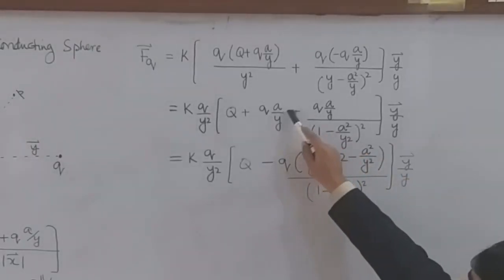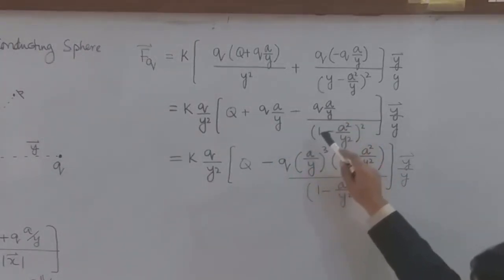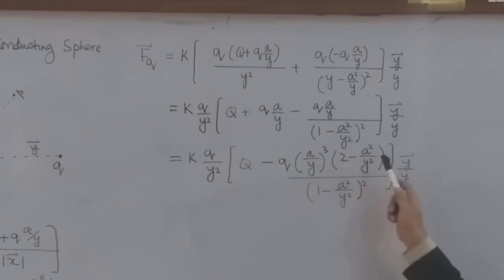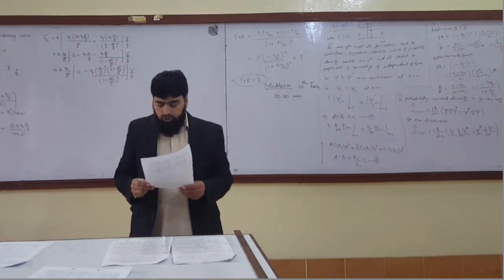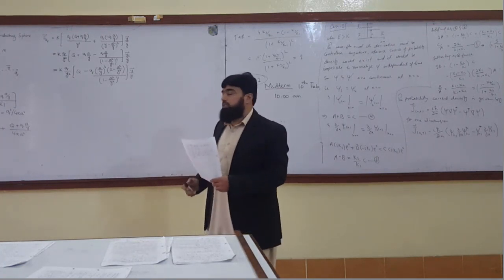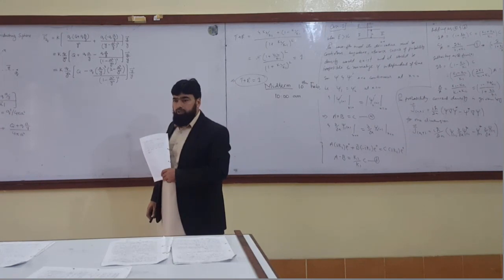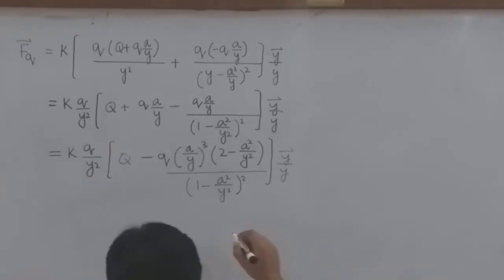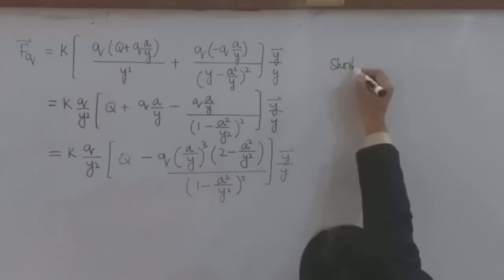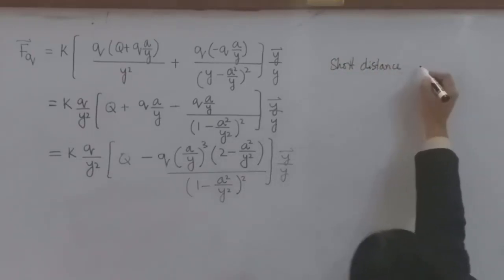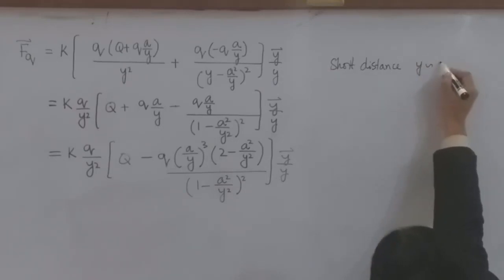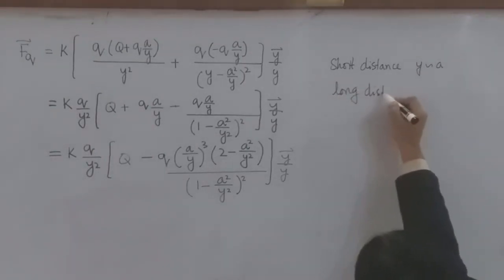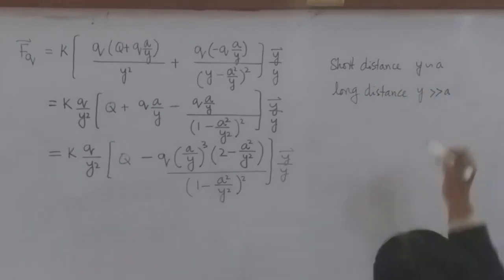You can do this step yourself. Just take this LCM, multiply with this, minus this, then take q·a over y, take q as common, so a over y, and take a over y here. Now, this is just for the purpose of putting the limits. Because we are having two limits. One is the short distance limit, and one is the long distance limit. The short distance limit is when y is approximately a, and the long distance limit is when y is way, way greater than a.